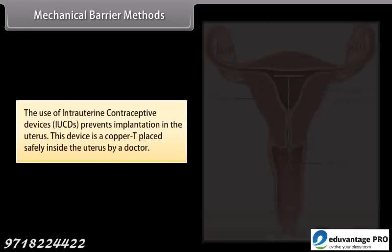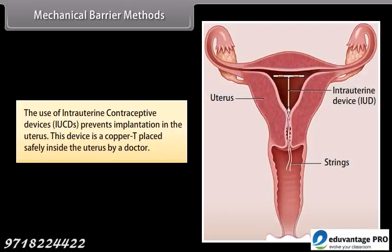The use of intrauterine contraceptive devices (IUCDs) prevents implantation in the uterus. This device is a copper T placed safely inside the uterus by a doctor.